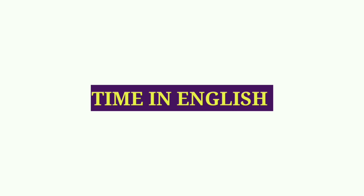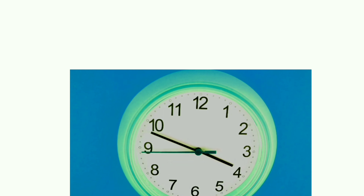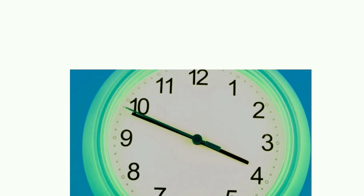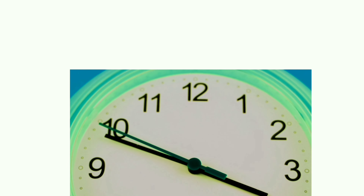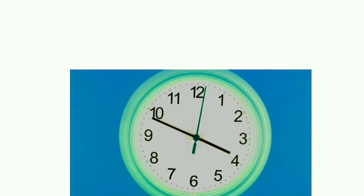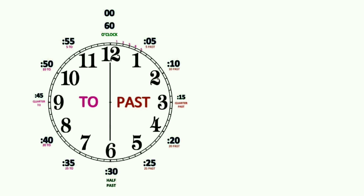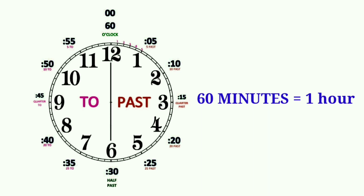Time in English. 60 seconds equals 1 minute. 60 minutes equals 1 hour.